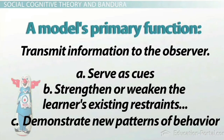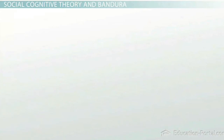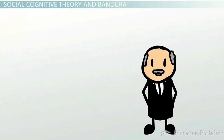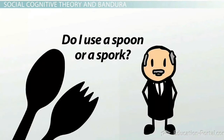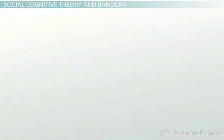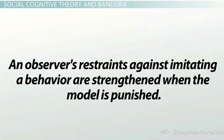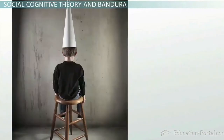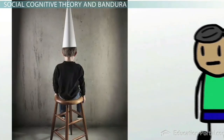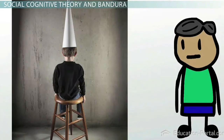An example of behavior serving as a social prompt is the hostess at an elaborate dinner party. A guest unfamiliar with the array of silverware observes the hostess to select the correct utensil appropriate for each course. Another example for strengthening or weakening behavior is when an observer's restraints against imitating behavior are strengthened when the model is punished. For example, if a classmate violates a school rule and is punished, this will make the observer think twice before attempting to break the rule.